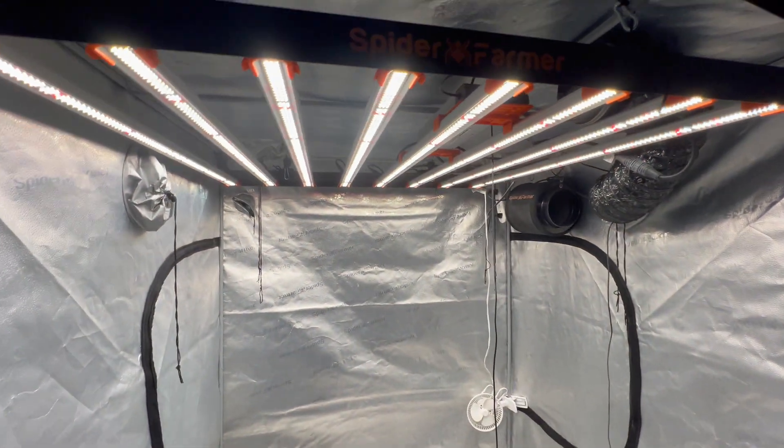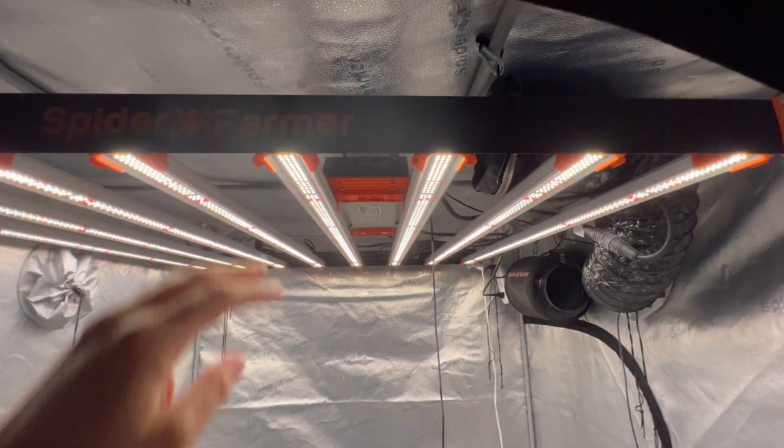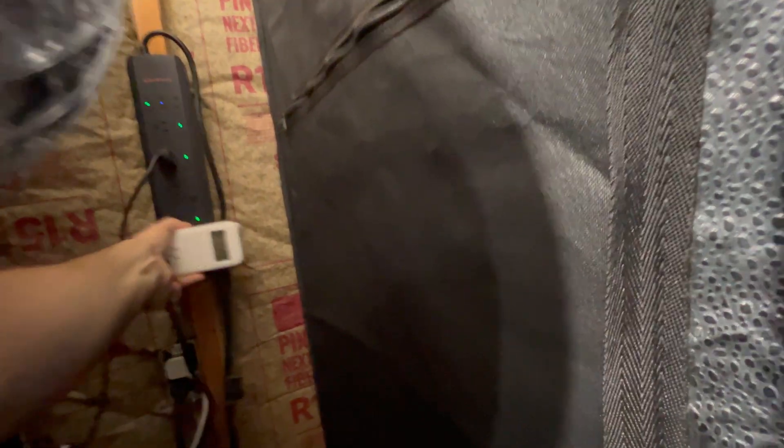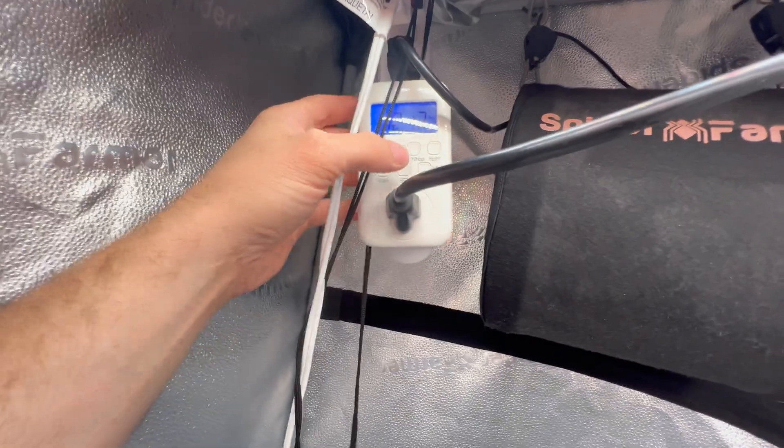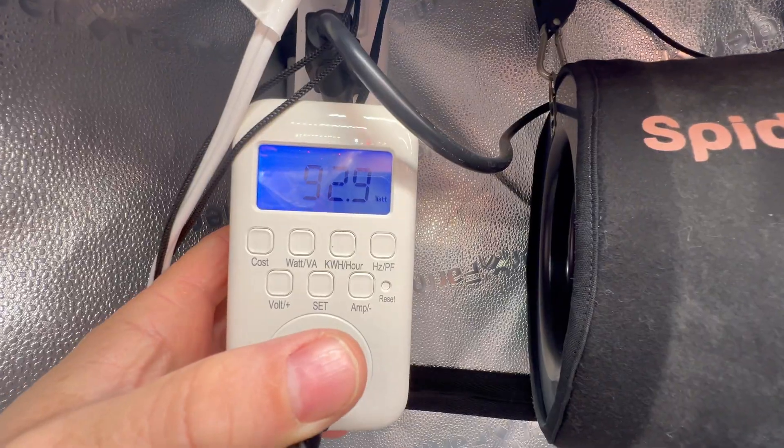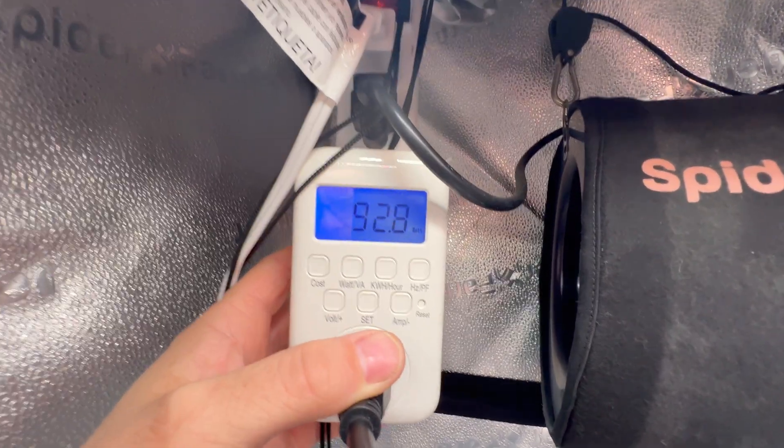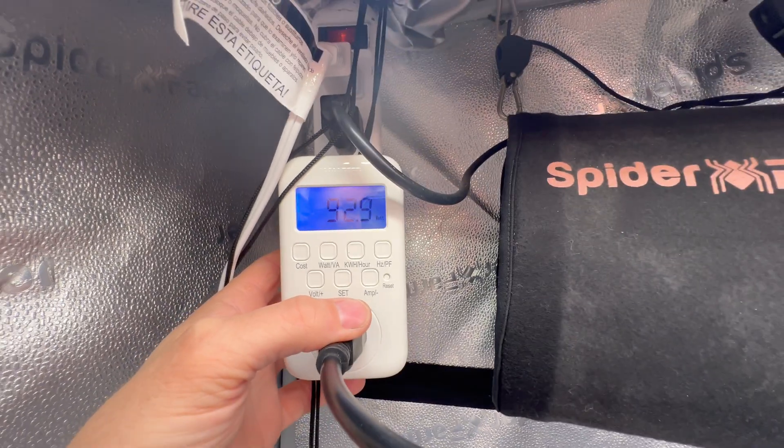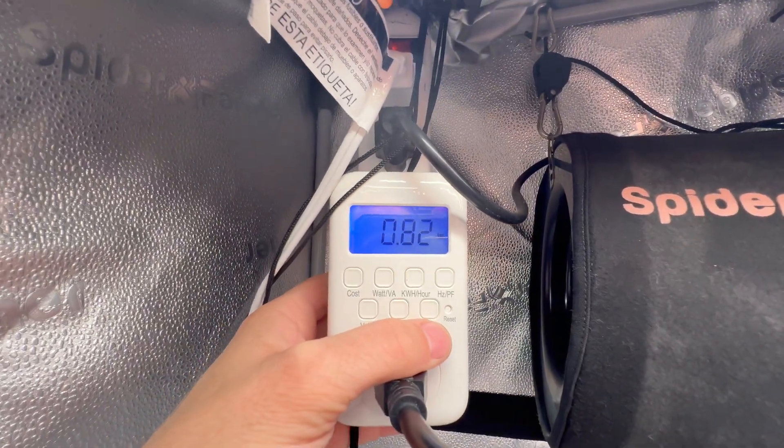Now the SE7000. Let me grab the wattage tester and see where it sits at its lowest rating. Right now it's showing that the light is pulling 92.9 watts at the lowest setting for the SE7000, and that is 0.82 amps.